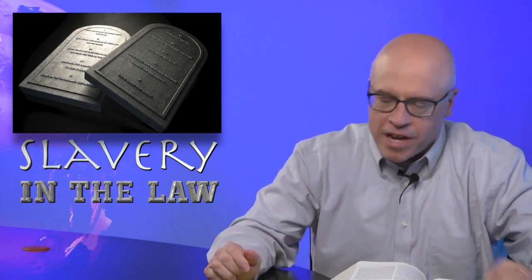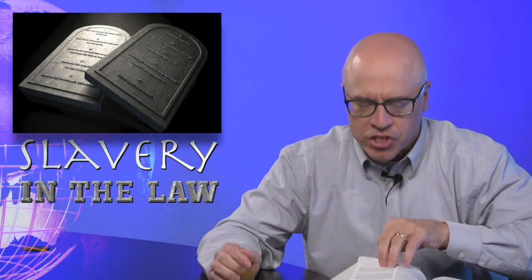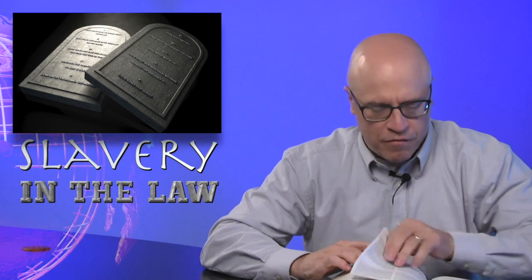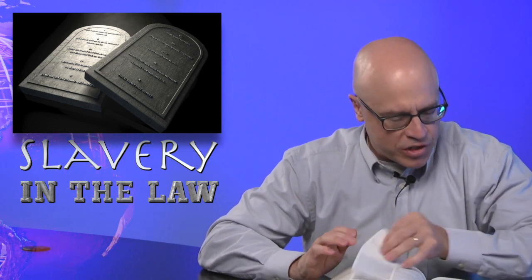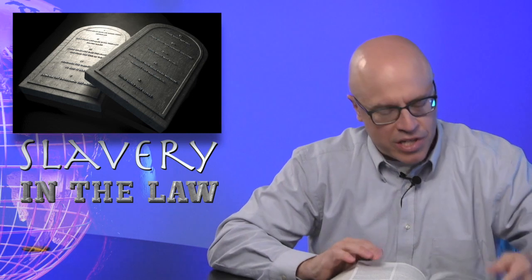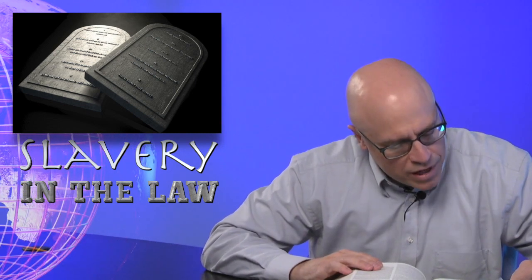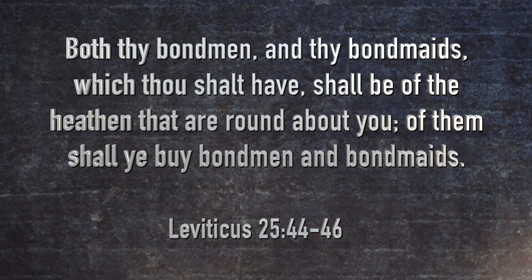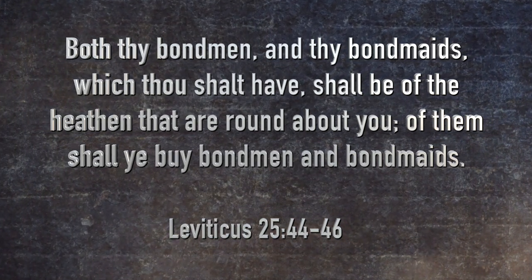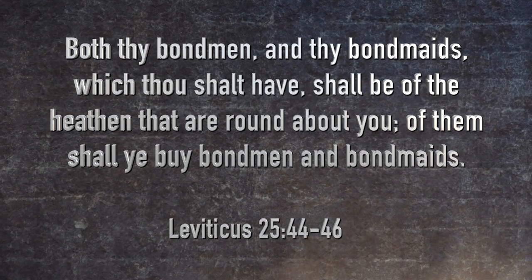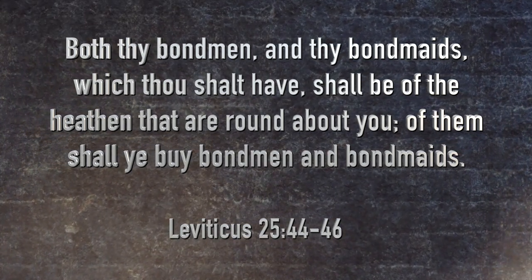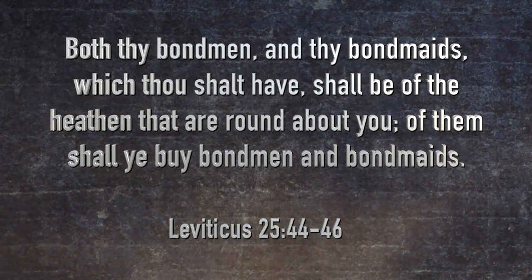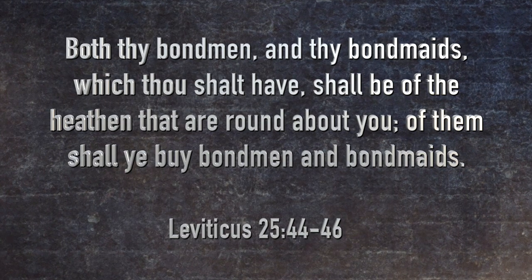Now let's begin over in Leviticus chapter 25, verse 44. Listen to what it says: Both thy bondmen and thy bondmaids - this is the King James Version, talking about slaves, men and women slaves - which thou shalt have shall be of the heathen that are round about you. Of them shall you buy bondmen and bondmaids.